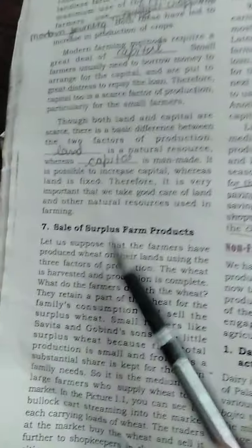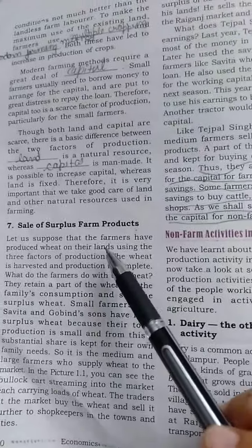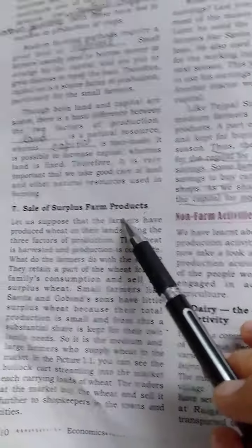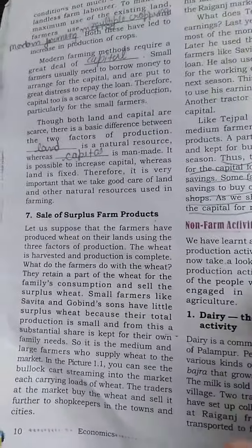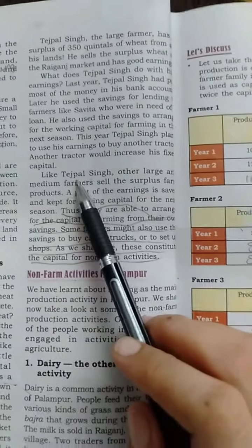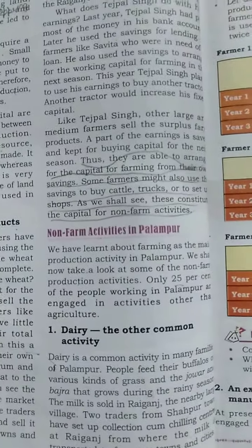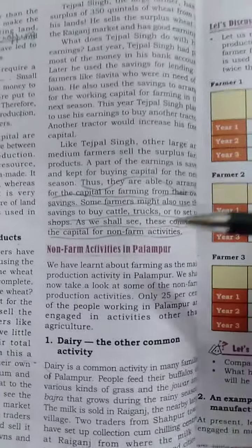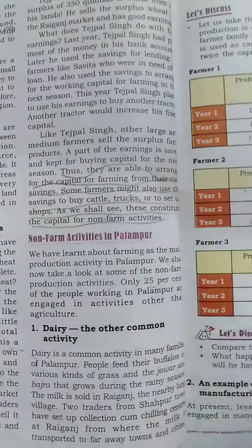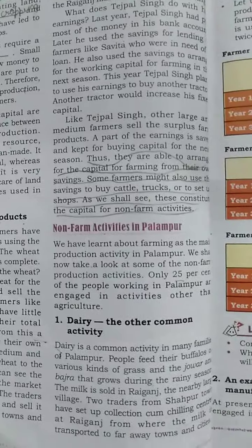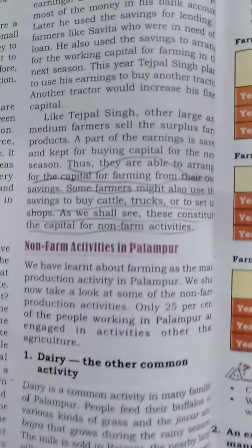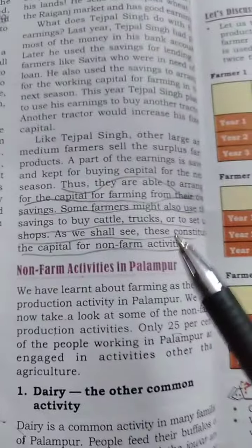The sixth point was the capital needed in farming, and we already completed the fill-in-the-blanks for that. The seventh point was the sale of surplus farm produce — whatever farmers produce, some is kept for self-consumption and the rest is sold in the market. We discussed the example of Tejpal, who invests money, deposits some in the bank, borrows fixed assets, and keeps some to use in the upcoming season or lend to others.